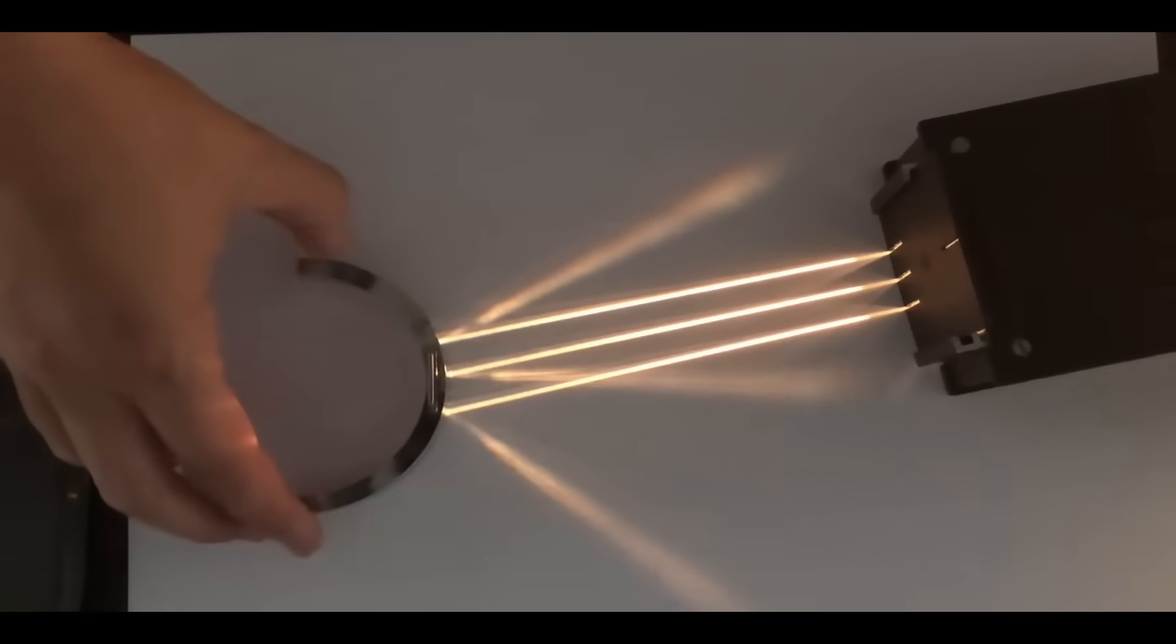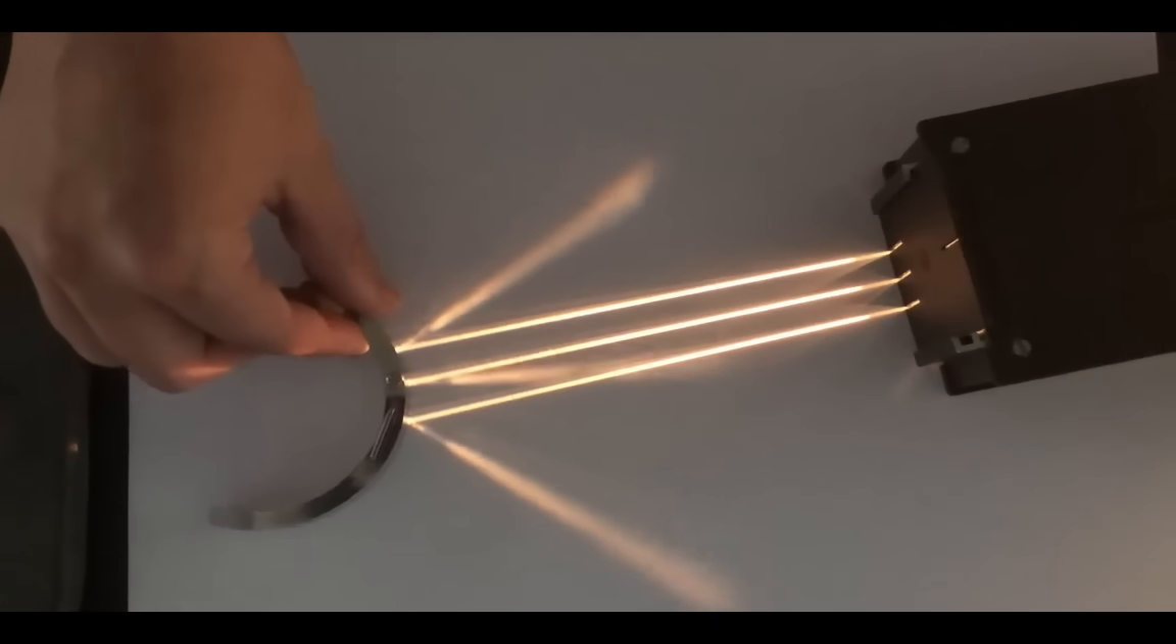Now when we're looking at a convex mirror here, the complete opposite happens. Instead of the rays being focused towards one another and we end up with a focal point, this actually causes the light to disperse. You can see that as the light hits the mirror, those beams are moving outwards, not towards one another.